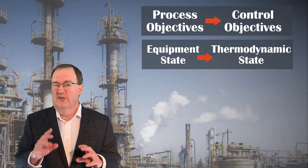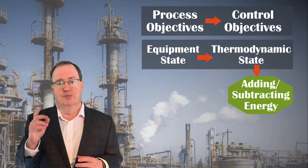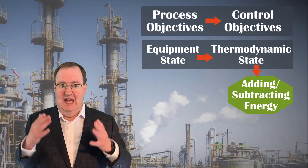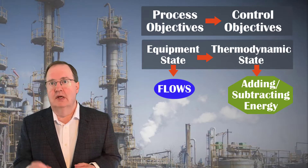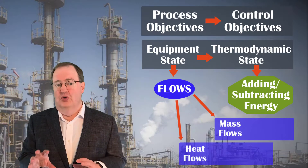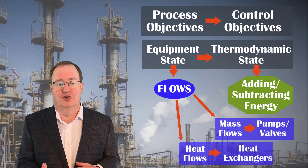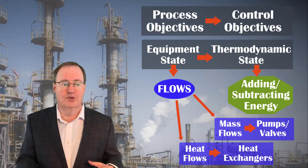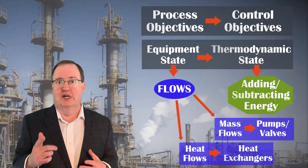That raises a few questions. First, how do we change the thermodynamic state? By adding and subtracting energy. Next, how do we manipulate the equipment state to add and subtract energy? The answer is that what we can control are flows — mass flows of fluids, gases and liquids, and flows of heat. Mass flows we'll control with pumps and valves. Heat flows we'll control with heat exchangers. So today, we'll learn the theory and practice of how controlling mass and heat flows allow us to add and subtract energy to reach and maintain a target thermodynamic state.